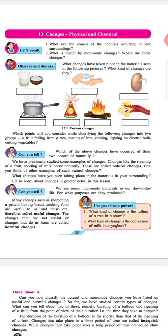Which points will you consider while classifying the following changes into two groups? A fruit falling from a tree, rusting of iron, raining, lightning in electric bulb, cutting vegetables.